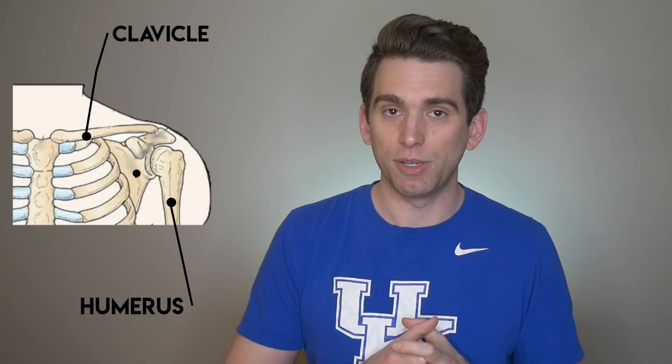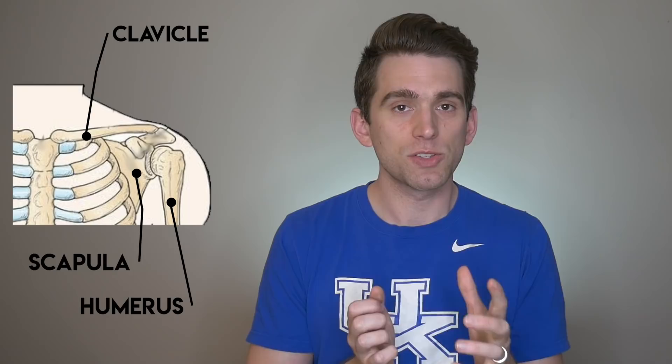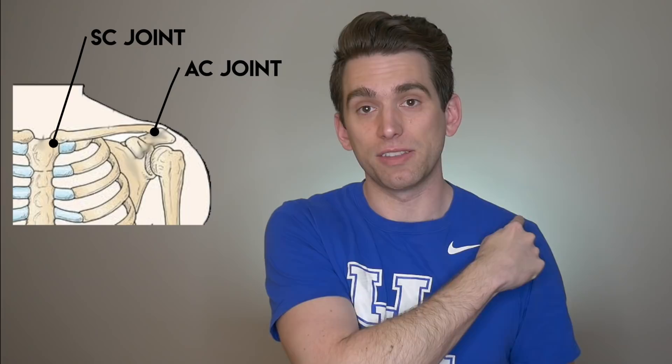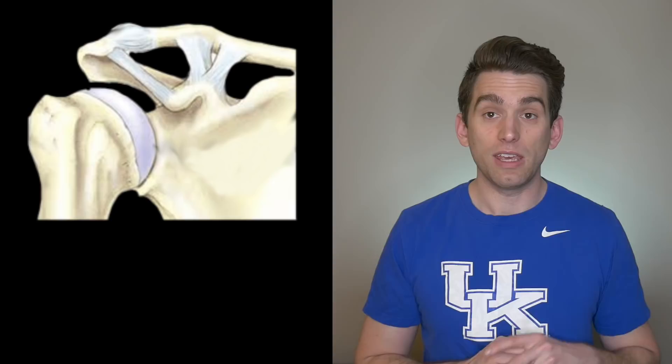Looking at our anatomy, the key structures to point out: first off we have the clavicle or the collarbone. Next is the humerus or the arm bone that comes up to form the humeral head. And then we have the scapula. The glenoid is the component of the scapula in which that humeral head rotates about. Also important on the scapula is the acromion — that kind of top bump that you can feel at the top of the scapula. So the key joints in the shoulder are the sternoclavicular joint at the clavicle and the sternum, the AC joint or the acromioclavicular joint, which is kind of the bump you can feel at the top of your shoulder, and then the glenohumeral joint. A separated shoulder involves this AC joint.